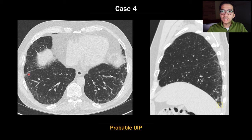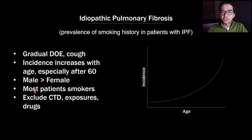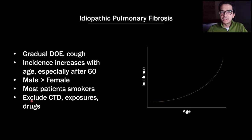Let's look at idiopathic pulmonary fibrosis. The typical patient with IPF presents with gradual dyspnea on exertion and cough. Patients are usually older — incidence increases notably around age 60. It's a little more common in males than females, though it's not rare in females. Most patients are smokers, with prevalence rates between 40–80%. IPF is idiopathic, so patients shouldn't have connective tissue disease, exposures, or drug reactions.